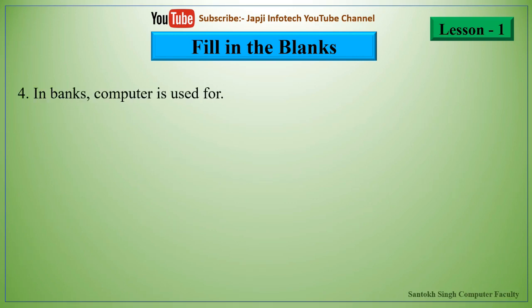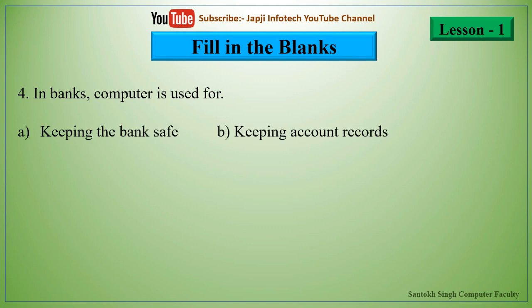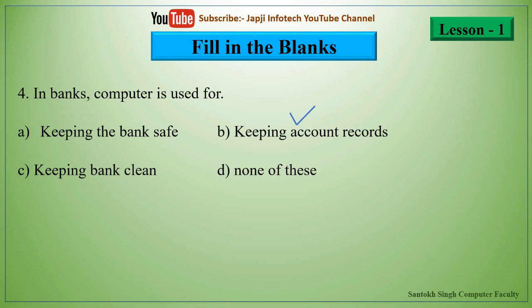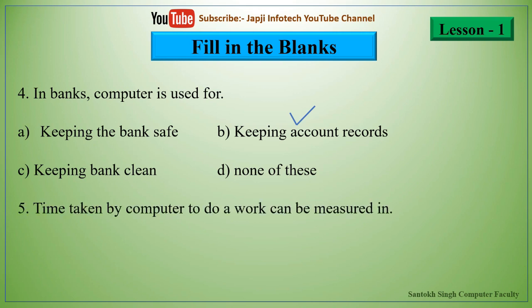The fourth one is: in a bank, computer is used for blank. The options are keeping the bank safe, keeping the account record, keeping the bank clean, or none of these. The right answer is keeping the account record. The fifth one is: time taken by computer to do a work can be measured in milliseconds.